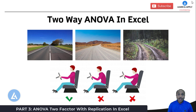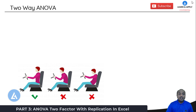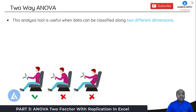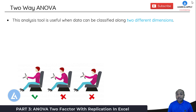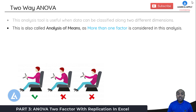Before starting the procedure, let's first understand what two-way ANOVA is and why it is called two-way ANOVA. This analysis tool is useful when data can be classified along two different dimensions — meaning we have two factors to perform the data analysis. In other words, we use two factors to check whether there is a significant difference between their means. Two-way ANOVA is also called analysis of means, as more than one factor is considered.